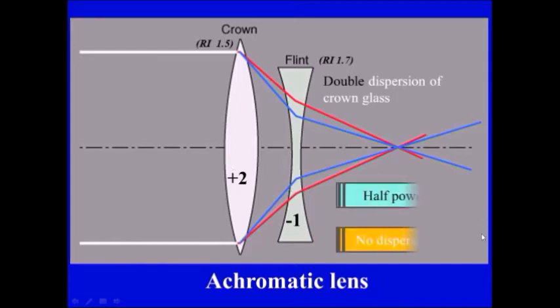But this minus one has a double dispersion compared to the crown and it is of the opposite sign. So the net result of dispersion is zero. So we have a lens of plus one this is the half power and the dispersion is zero.